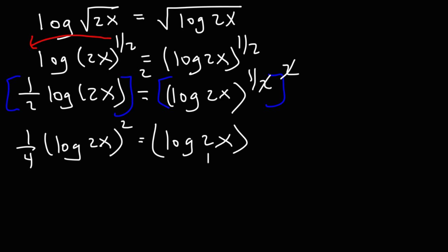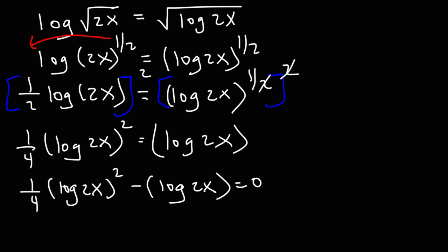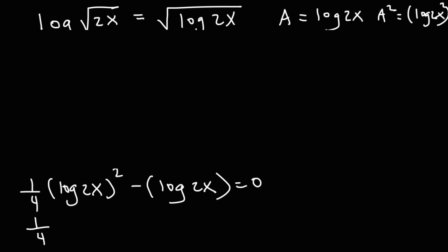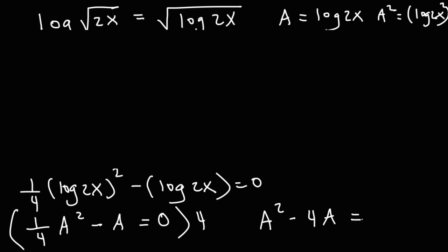Just like before, we move this expression to the other side — it's positive on the right but negative on the left. Now we make a substitution: let a equal log 2x, which means a squared equals log 2x squared. So we have 1/4 times a squared minus a equals 0. To get rid of the fraction, multiply everything by 4, giving us a squared minus 4a equals 0. Factoring out the GCF, we get a times a minus 4 equals 0.